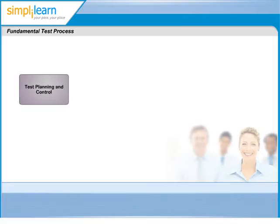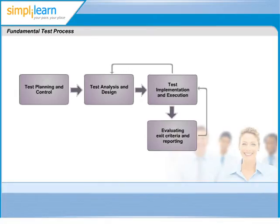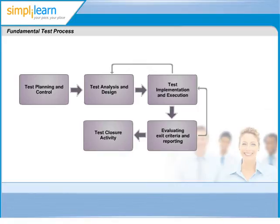Here, we will cover how these activities are organised into different phases of the test lifecycle, which are test planning and control, test analysis and design, test implementation and execution, evaluating exit criteria and reporting, and finally, test reporting.